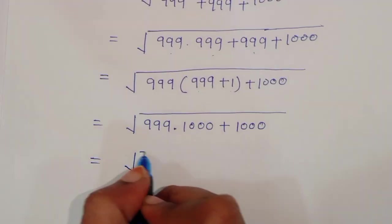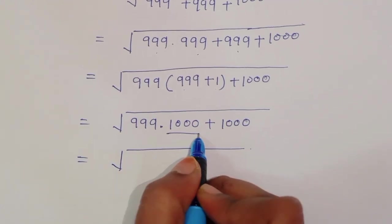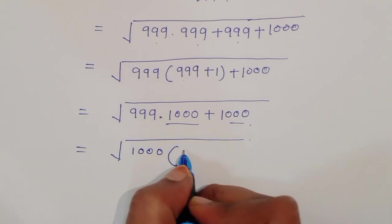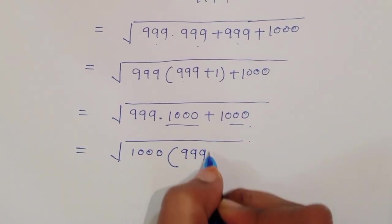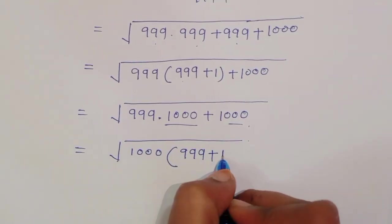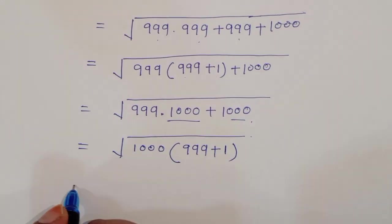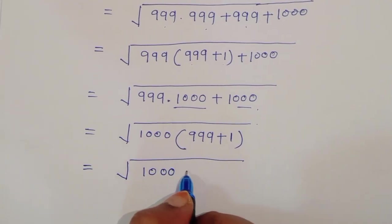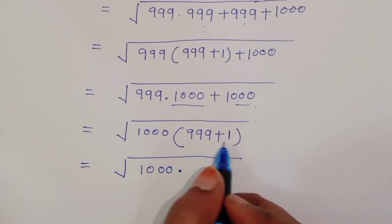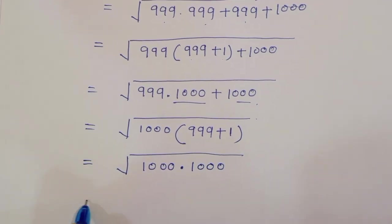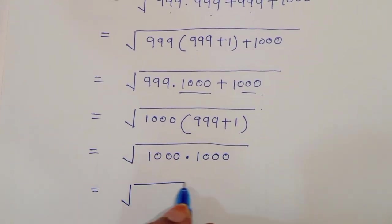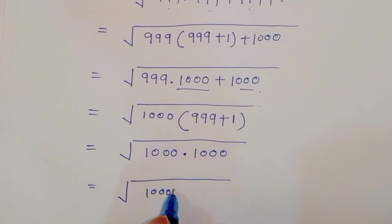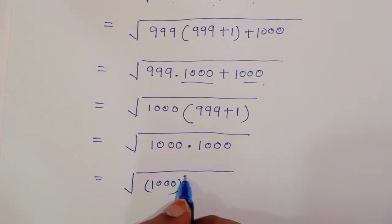This equals 1000, 1000 — we can take 1000 common. We can write this as 1000 times 999 plus 1, and 999 plus 1 is common, so we are left with 1000 times 999 plus 1, that is 1000. This equals 1000 times 1000, which we can write as the square of 1000.